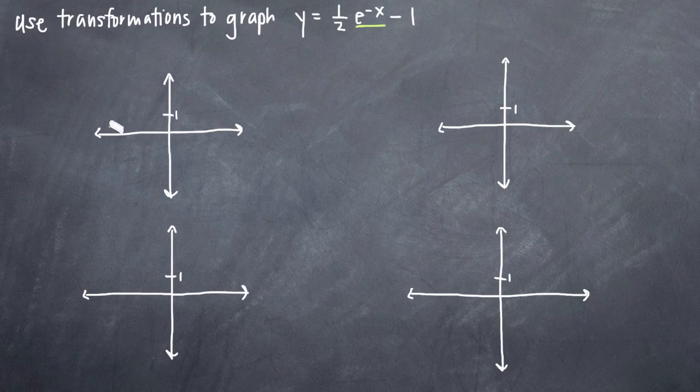We could sketch the graph of e to the x and that looks something roughly like this. You may know that it's a curve that looks like this. It intersects the y-axis at y equals 1 and this would be e to the x. But we don't have e to the x.